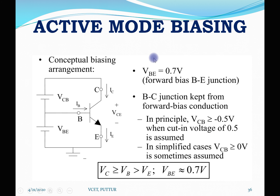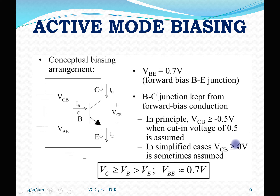In the active mode, the emitter-base junction is forward biased and the collector-base junction is reverse biased. VBE is approximately 0.7 volt, forward biasing the base-emitter junction. The collector-to-base voltage is kept from forward bias — typically considered as 0 — so the collector voltage is greater than or equal to the base voltage, which is greater than the emitter voltage, where VBE is 0.7 volt.